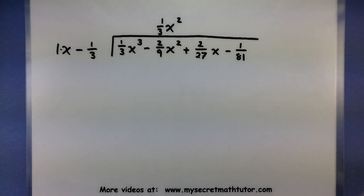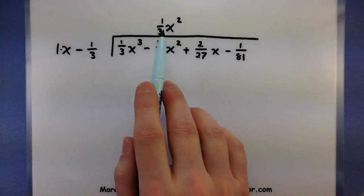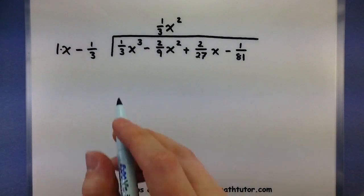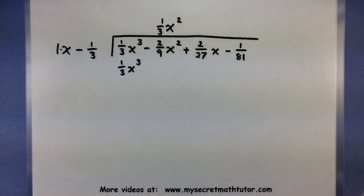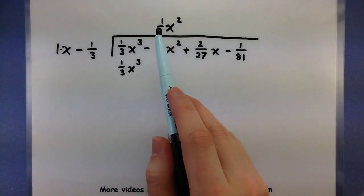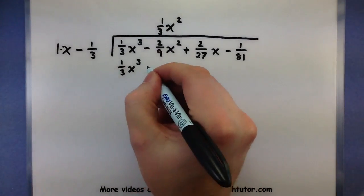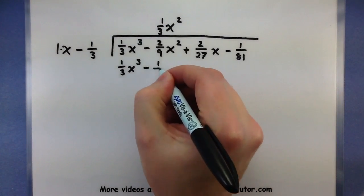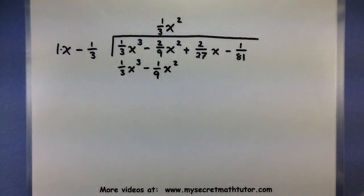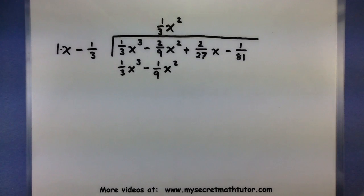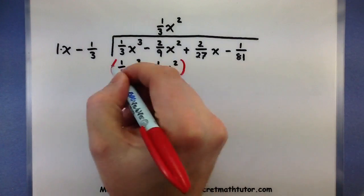Alright, let's go ahead and multiply through and see what we get. So, 1/3 x² multiplied by x will be 1/3 x³. Now we have to multiply some fractions: 1/3 multiplied by negative 1/3 is negative 1/9, and of course, here's my x². If your fractions are a little more complicated, you may have to do some scratch work — but that's okay. You just want to make sure that you find those new fractions and subtract them carefully in the next step.